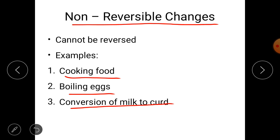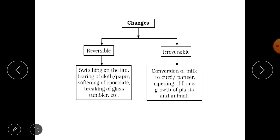So students these were the two categories. Now a flow chart will help you to understand it. The changes around us are of two types: reversible and irreversible. You can even say non-reversible. Both words are correct.